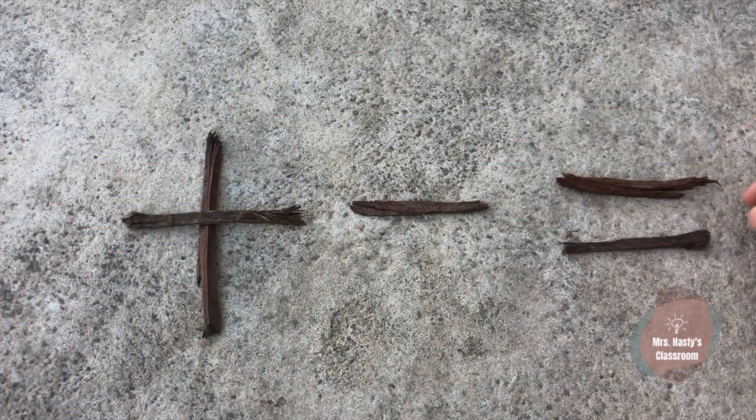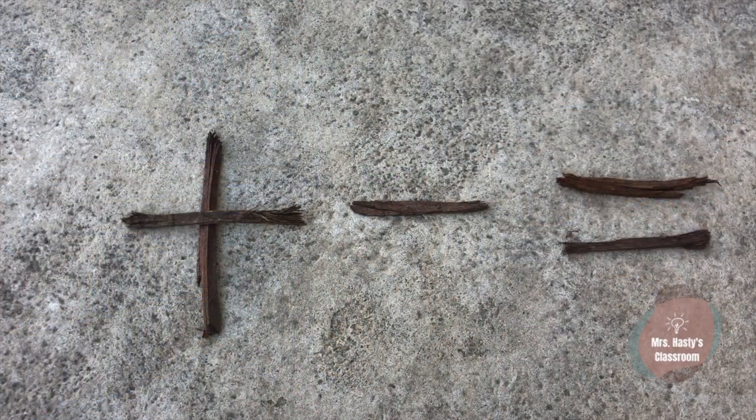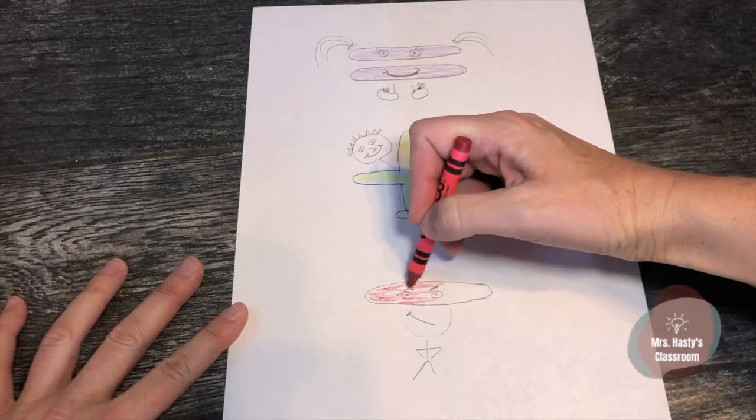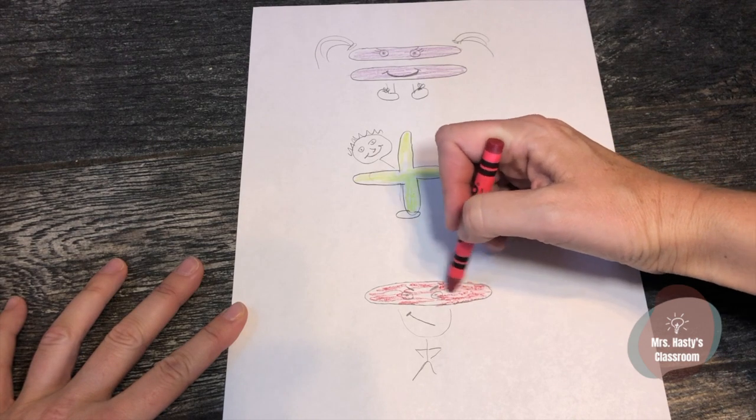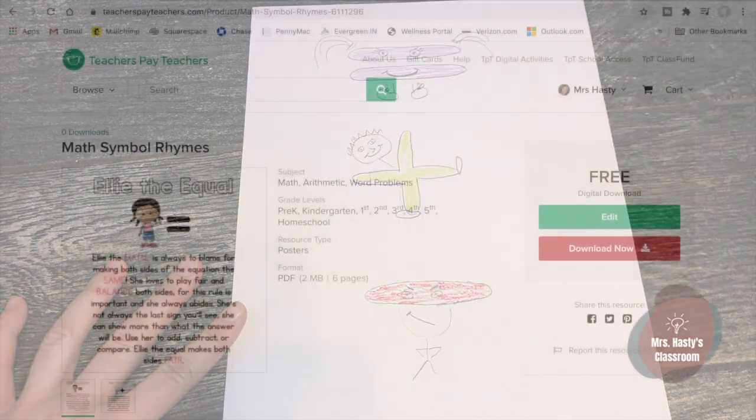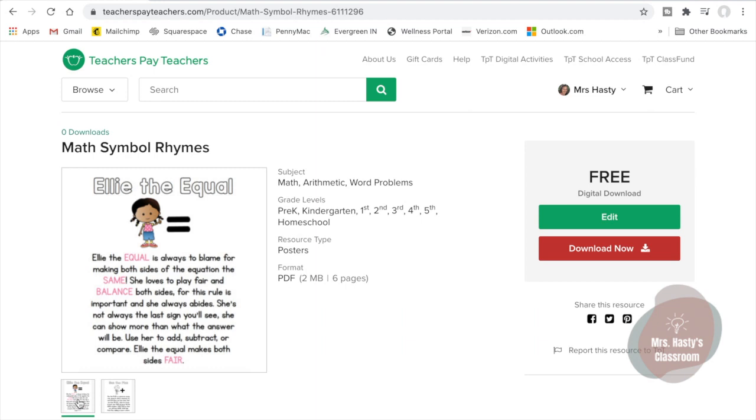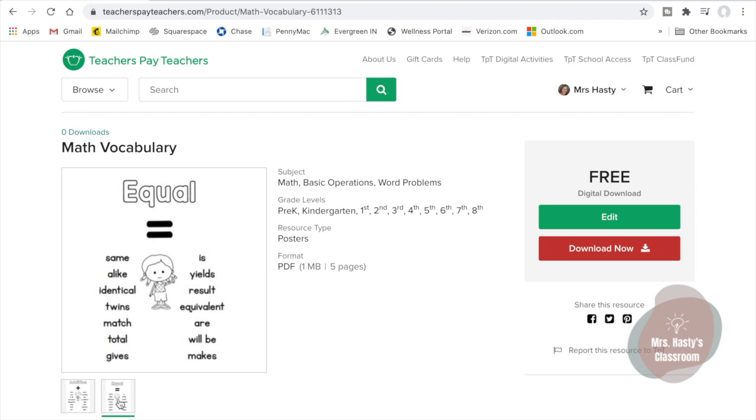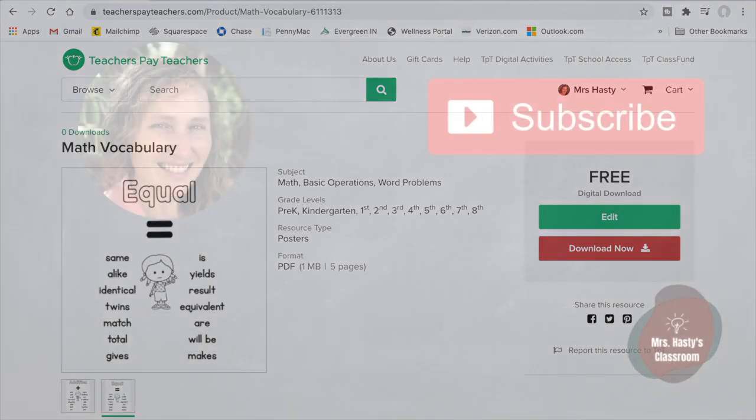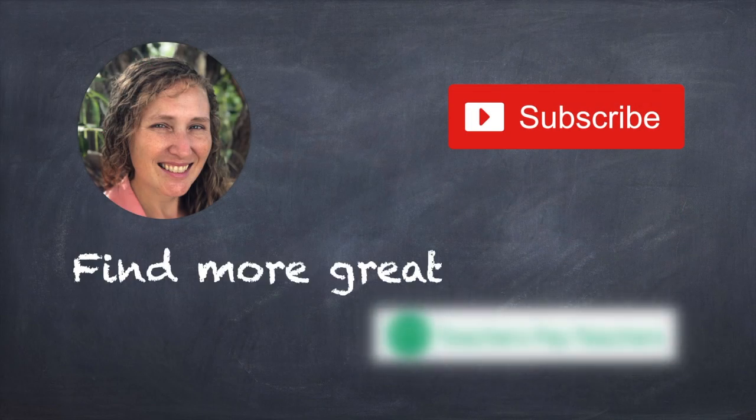Make math symbols with sticks or branches outside. You can try drawing what you think Ellie, Gus, and Linus look like. And there's always printable resources available at my teacher's store at teacherspayteachers.com Don't forget to subscribe!